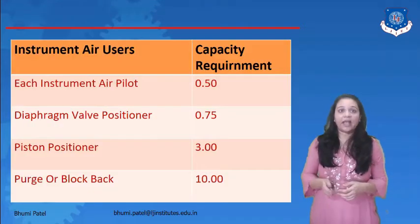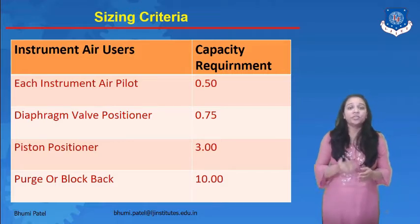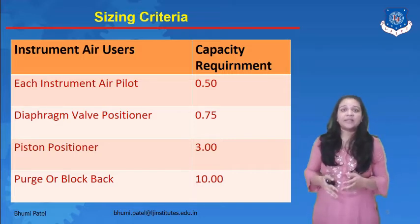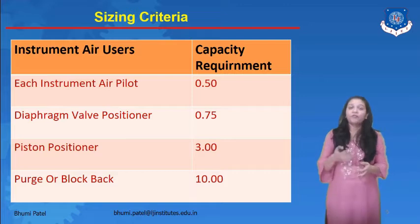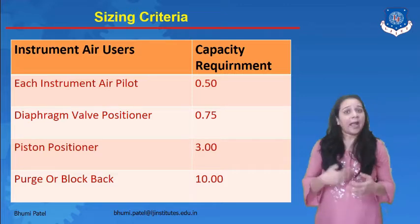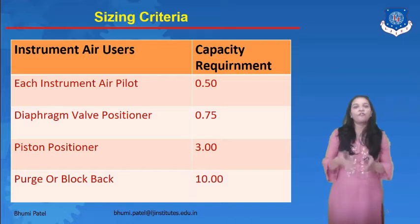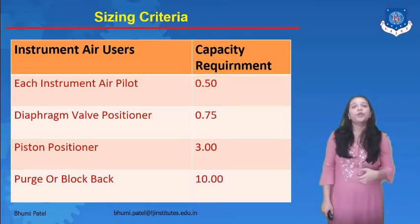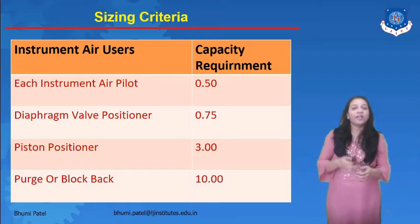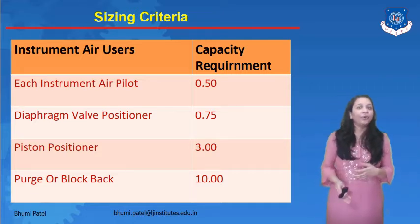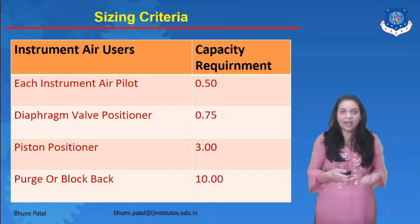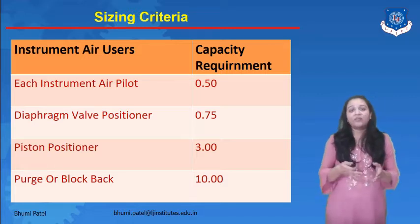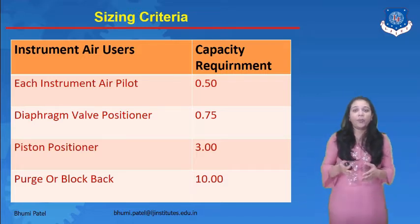The first is the sizing criteria. In the sizing criteria, we use different air users, and for each particular air user there is a different capacity requirement. For example, for an air pilot instrument, the capacity requirement is 0.50. For a diaphragm valve positioner — which decides the position of the control valve — the capacity required is 0.75.